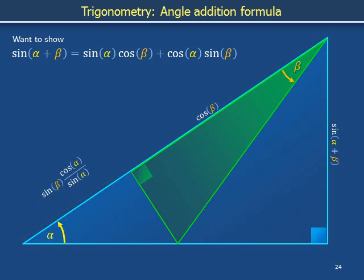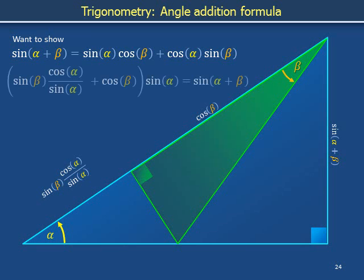We determined previously that the length of the leg of the big blue triangle opposite the angle alpha was sine alpha plus beta. This length must also be equal to the length of the hypotenuse of the big blue right triangle times sine alpha, according to the definition of sine. This equation is the angle addition formula we sought to show.